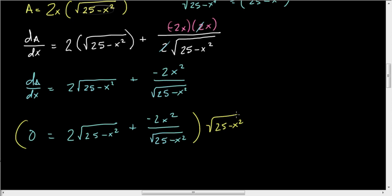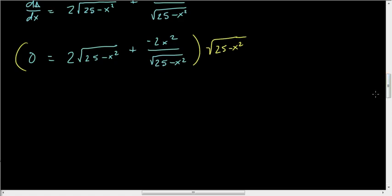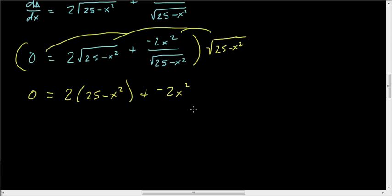If I distribute this to each thing, 0 times that is still 0. The square roots are going to cancel, and so you get 2 times 25 minus x squared. This is going to cancel the bottom, so you just get plus negative 2x squared. So we have 0 equals 50 minus 2x squared minus 2x squared, which gives us 50 minus 4x squared.